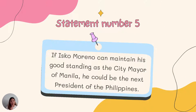And for the last statement: 'If Isco Moreno can maintain his good standing as the city mayor of Manila, he could be the next president of the Philippines.' Obviously, it is an opinion. Marvelous — great job, students! Now let's see if you can still differentiate fact and opinion. Here's Sir Jasper to facilitate our next activity.